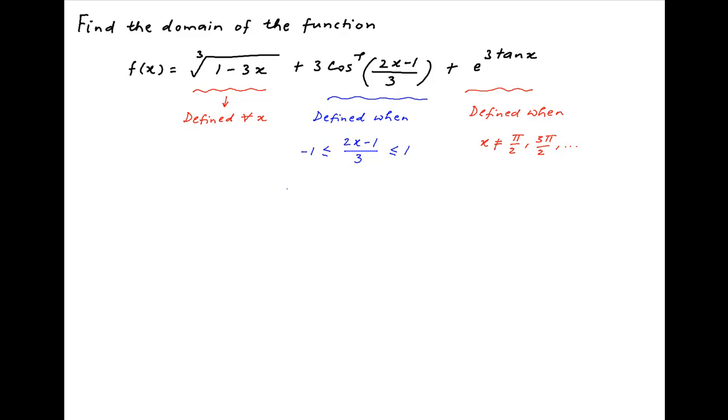Now going back to the second term, and multiplying across the board with 3, we get 2x - 1 lies between minus 3 and 3. Adding 1 across the board, we get 2x is greater than or equal to minus 2 and less than or equal to 4. Or, x lies in the closed interval ranging from minus 1 to 2.